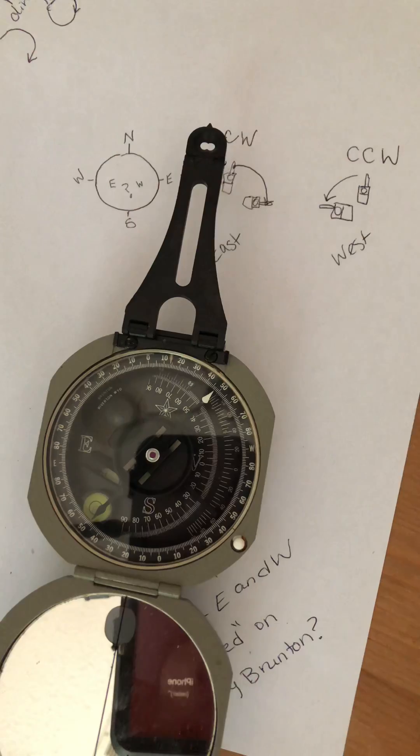So my final answer, why are east and west flipped on my Brunton? East and west are flipped on your Brunton because your Brunton is trying to account for the direction it's pointed in, knowing that the needle is always going to be pointed north.